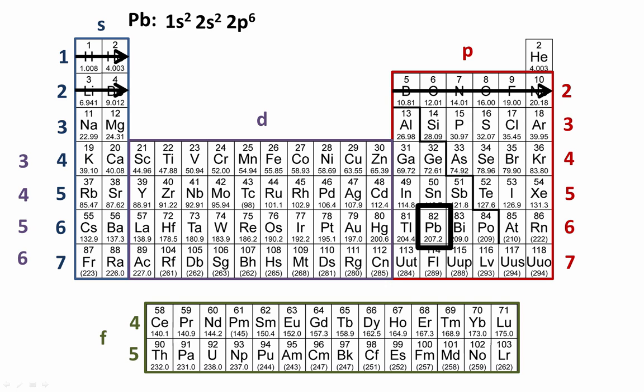After neon, we go to sodium, which is in the s block. Filling from sodium to magnesium gives 3s². Aluminum begins the 3p subshell, so aluminum to argon is 3p⁶.